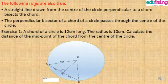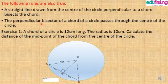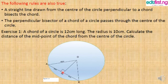The following rules are also true: a straight line drawn from the center of the circle perpendicular to the chord bisects the chord. The perpendicular bisector of a chord of a circle passes through the center of the circle. As you can see, this line bisects this chord, and for it to bisect this chord it must come from or pass through the center of the circle. Now let's try this exercise.